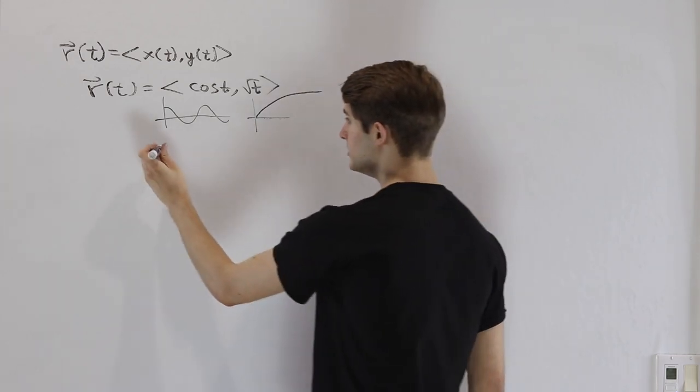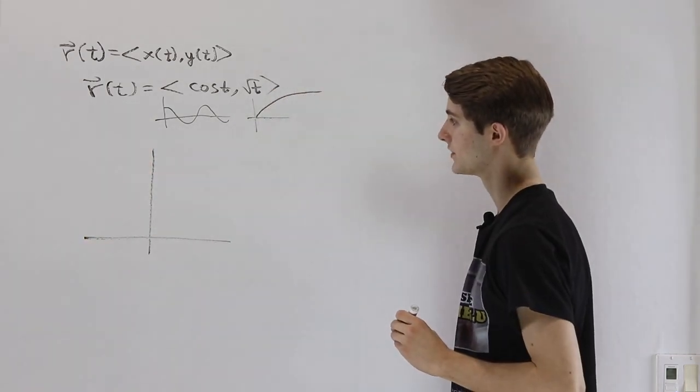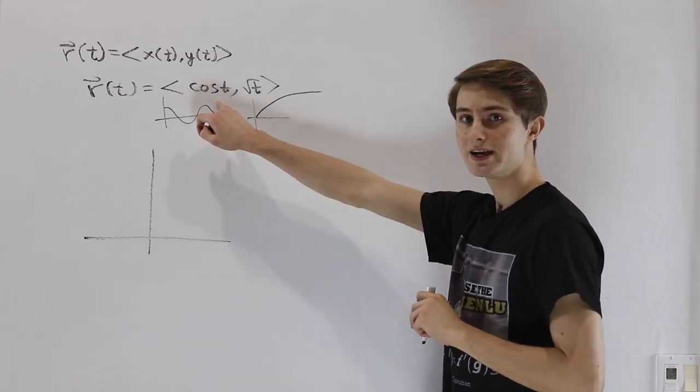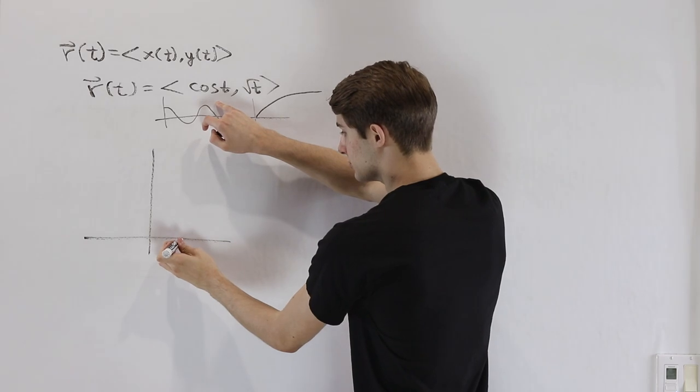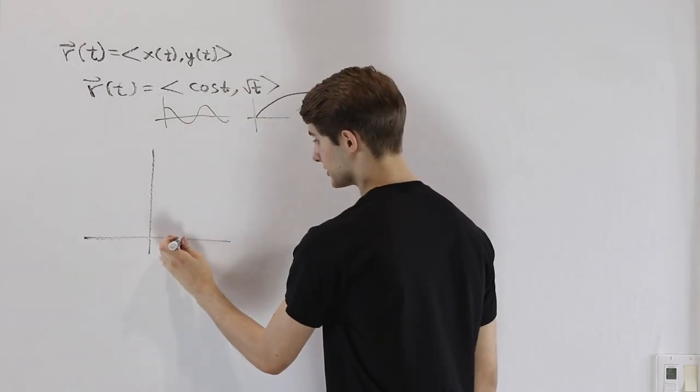So now we're going to put these two together into the graph of a vector function. If we start at t equals 0, we're going to be looking at the x component of cos(0), which is 1, and the y component, the square root of 0, is just 0. So we're going to start here.